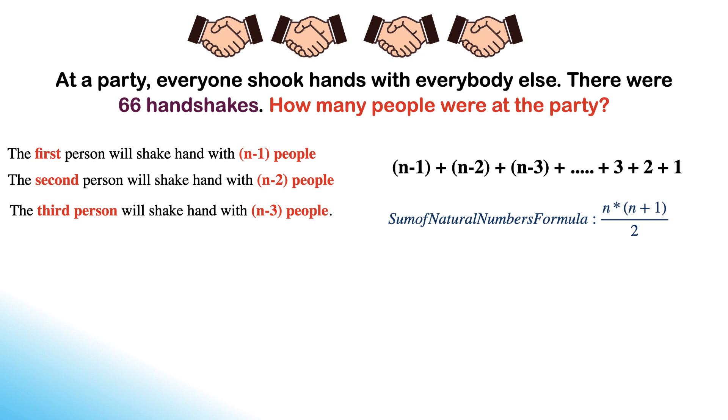Natural numbers are also called counting numbers, starting from the number 1 until infinity, such as 1, 2, 3, 4, 5, 6, 7, and so on.